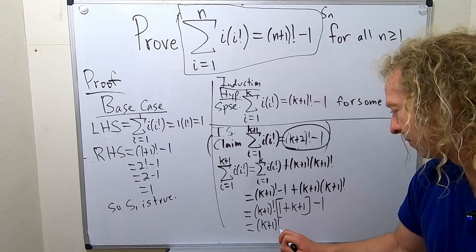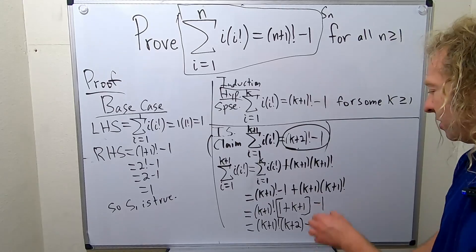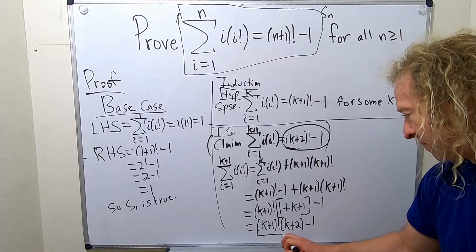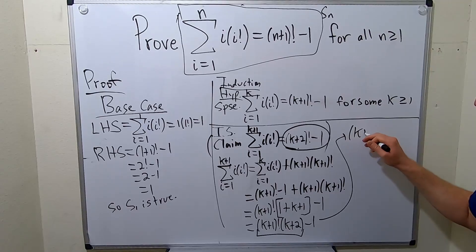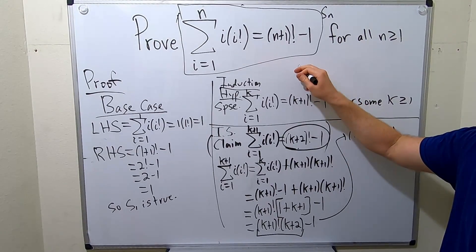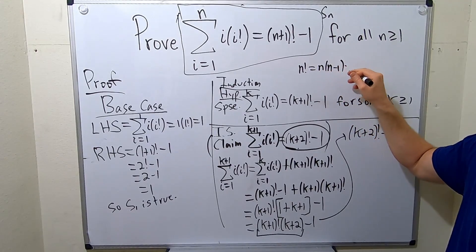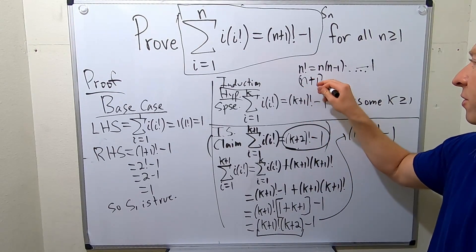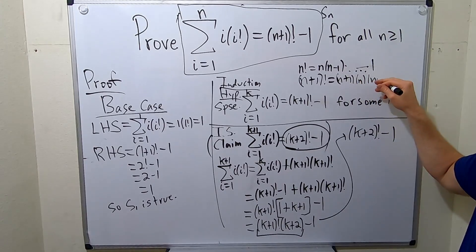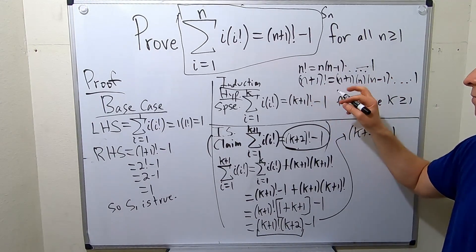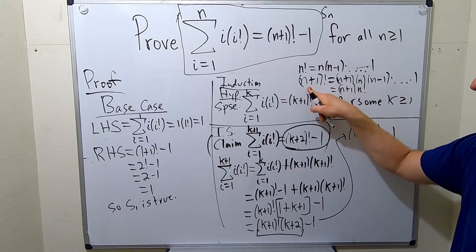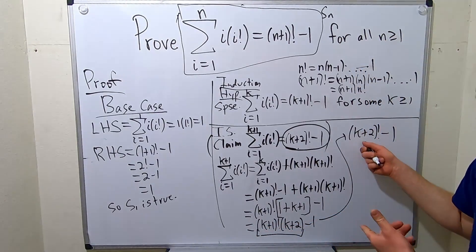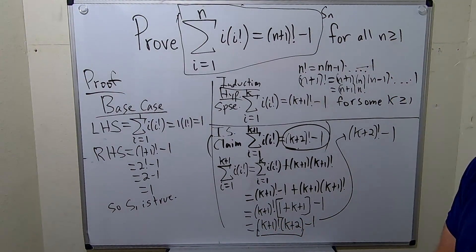So this gives us k plus 1 factorial times k plus 2, minus 1 — and that's k plus 2 factorial minus 1. If you have n factorial, that's n times n minus 1 times ... times 1. So n plus 1 factorial is n plus 1 times n factorial. The same thing applies here: k plus 1 factorial times k plus 2 gives k plus 2 factorial. So this is indeed k plus 2 factorial minus 1, which is exactly what we needed to show.